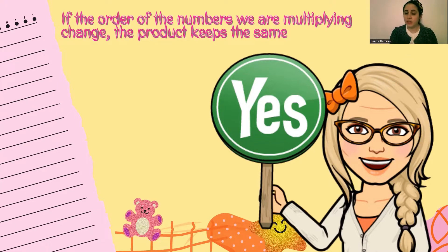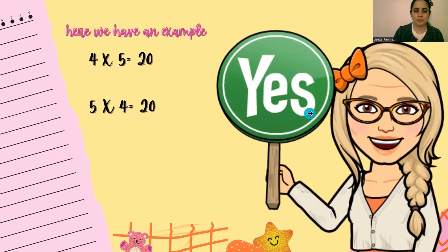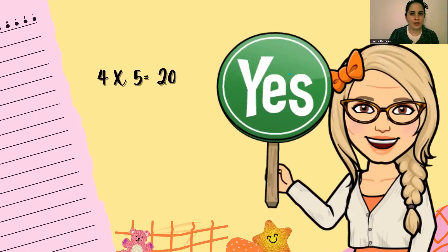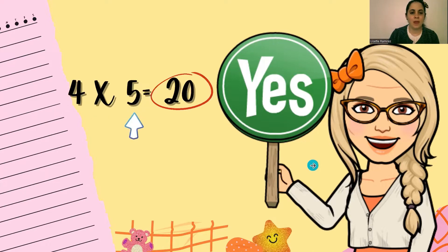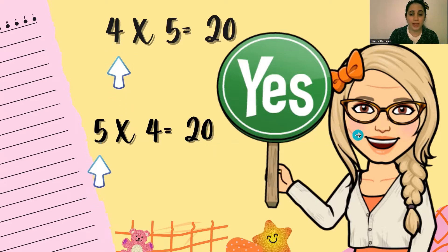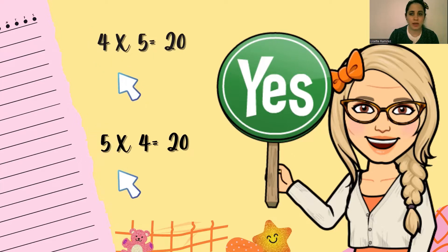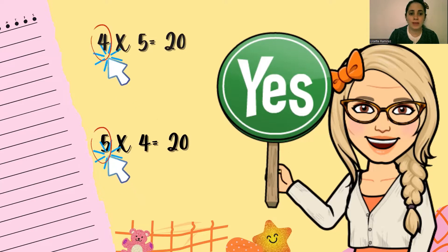We're going to work with pictures so that you can understand the differences. Let's take a look at these two examples: 4 times 5 and 5 times 4. In the first sentence, the number 4 is the first factor, the second factor is 5, and the product is 20. In the second multiplication sentence, the first factor is 5 and the second one is 4. But the product in both sentences is the same — and this is exactly what commutative property of multiplication allows us to do. We can switch the factors and the product will always be the same.